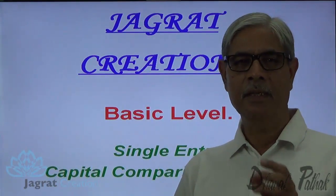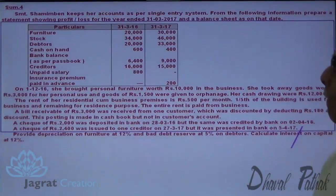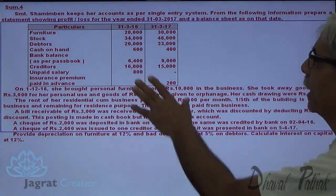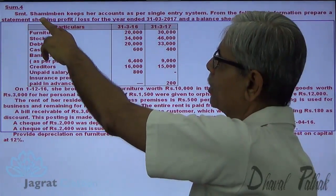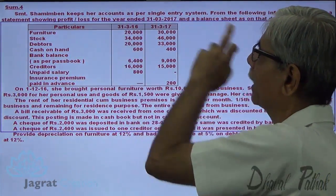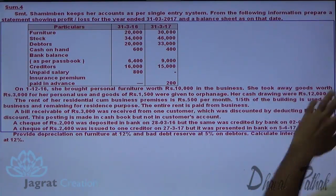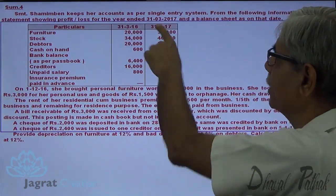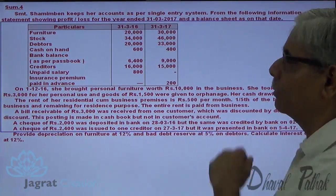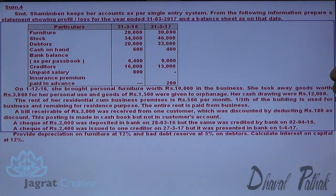Now, the sum that I intend to solve — just observe that on the screen. Shamima Benk keeps the accounts as per the single entry system. From the following information, prepare a statement showing the profit or loss for the year ended on 31st of March 2017 and the balance sheet as on that date.